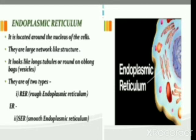They are of two types: RER, or rough endoplasmic reticulum, and SER, or smooth endoplasmic reticulum. The rough endoplasmic reticulum is not smooth because of the presence or attachment of ribosomes on its surface. Ribosomes manufacture proteins, and proteins are needed for the survival of all cells.